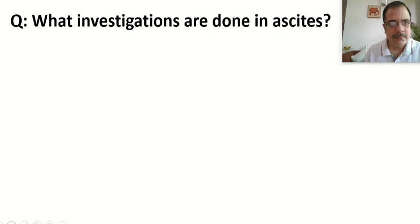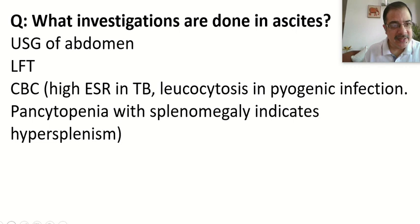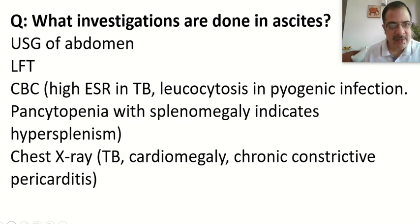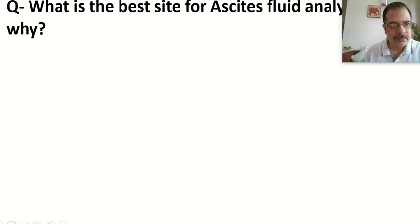Investigations for ascites include: ultrasound abdomen to confirm diagnosis; liver function tests to rule out chronic liver disease; CBC — high ESR suggests tuberculosis, leukocytosis suggests pyogenic peritoneal infection, pancytopenia with splenomegaly indicates hypersplenism; chest X-ray to rule out pulmonary tuberculosis, cardiomegaly, or constrictive pericarditis (pericardial calcification). Ascitic fluid analysis is of paramount importance to identify the exact cause.